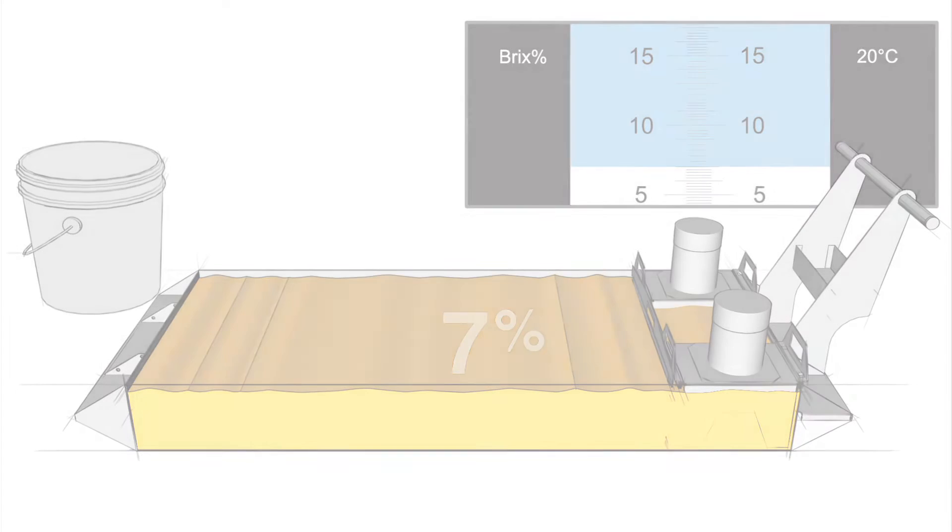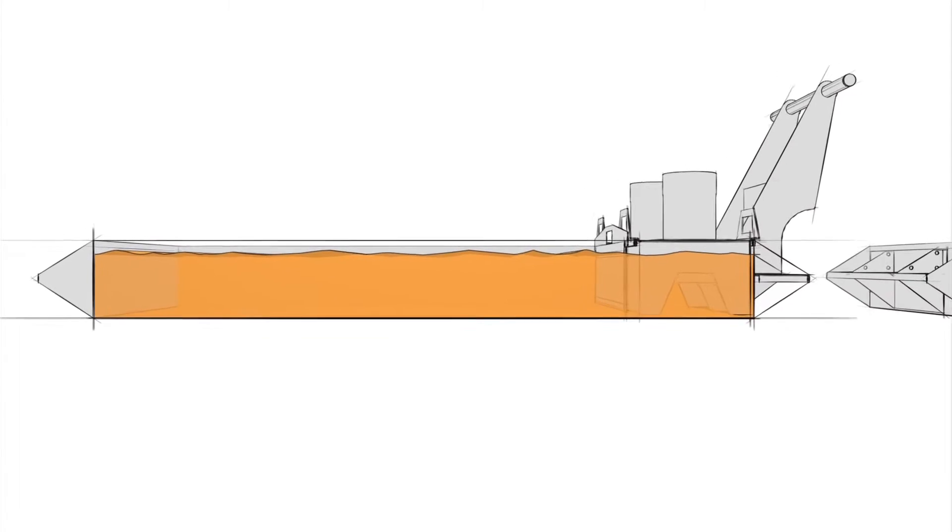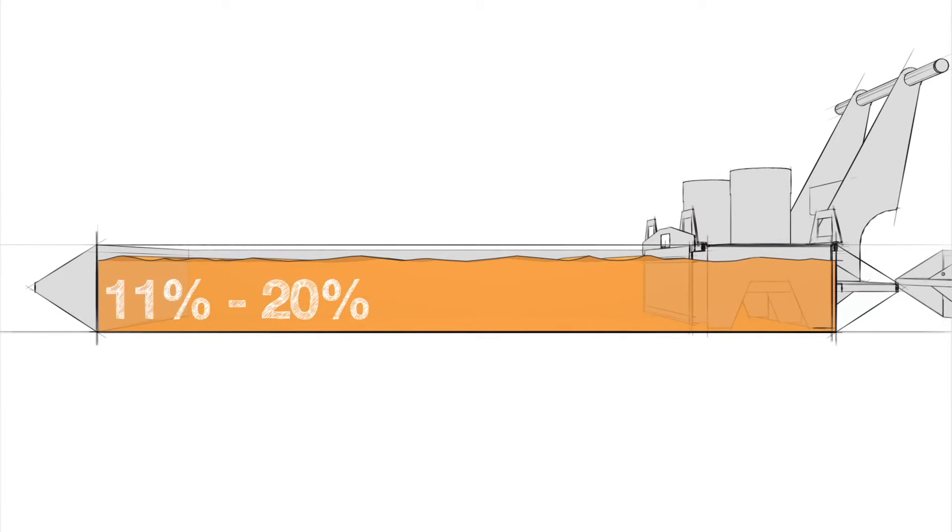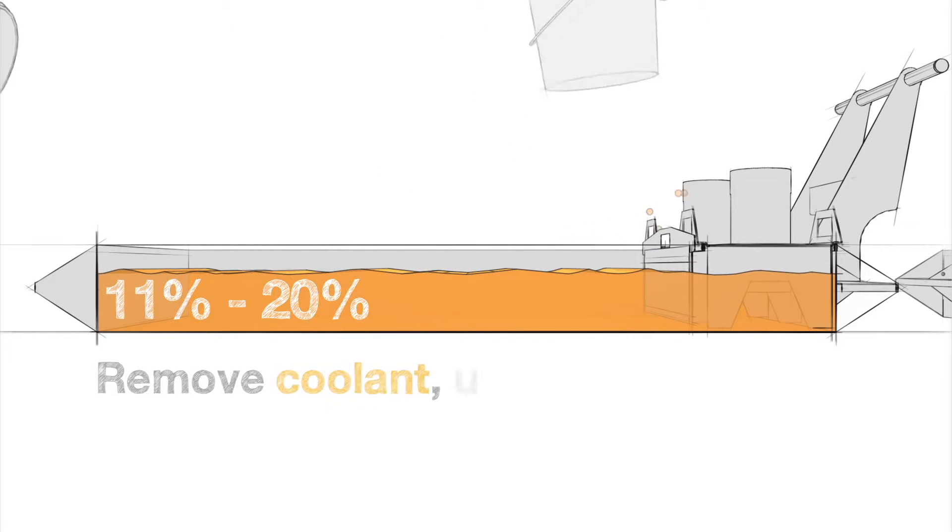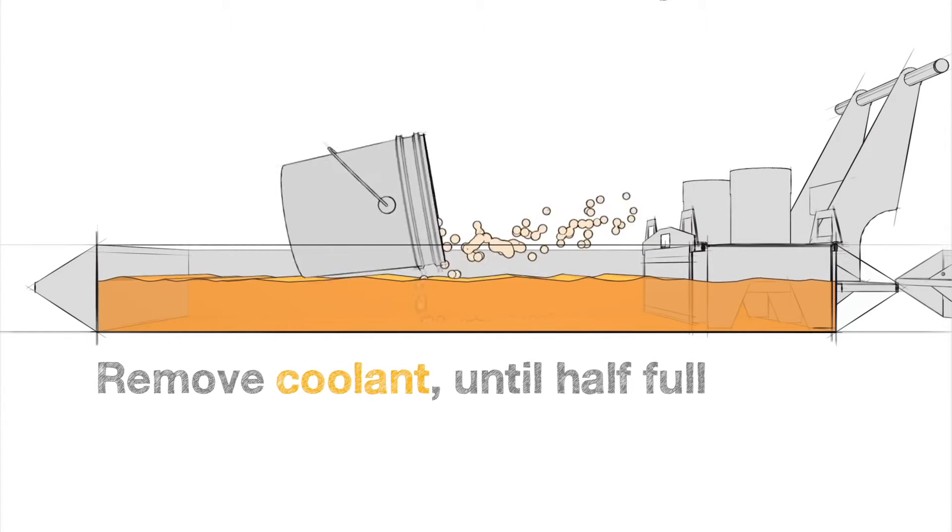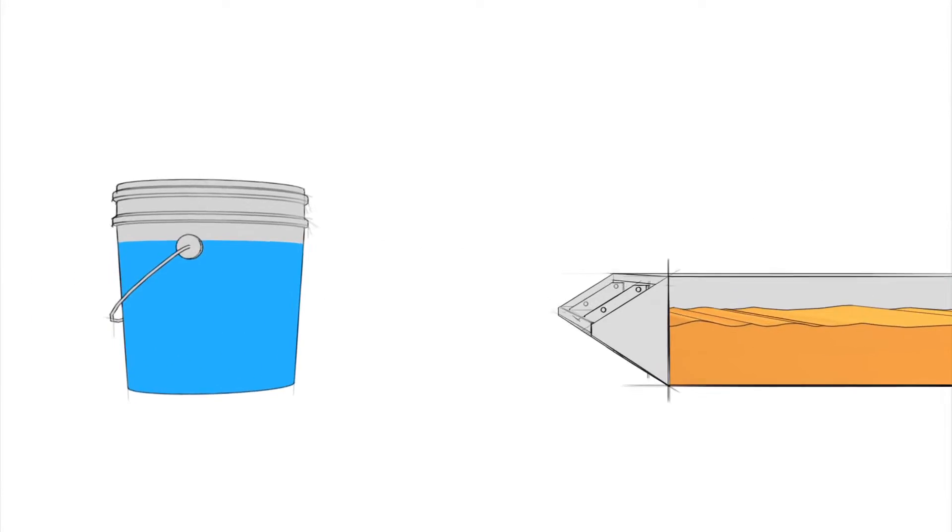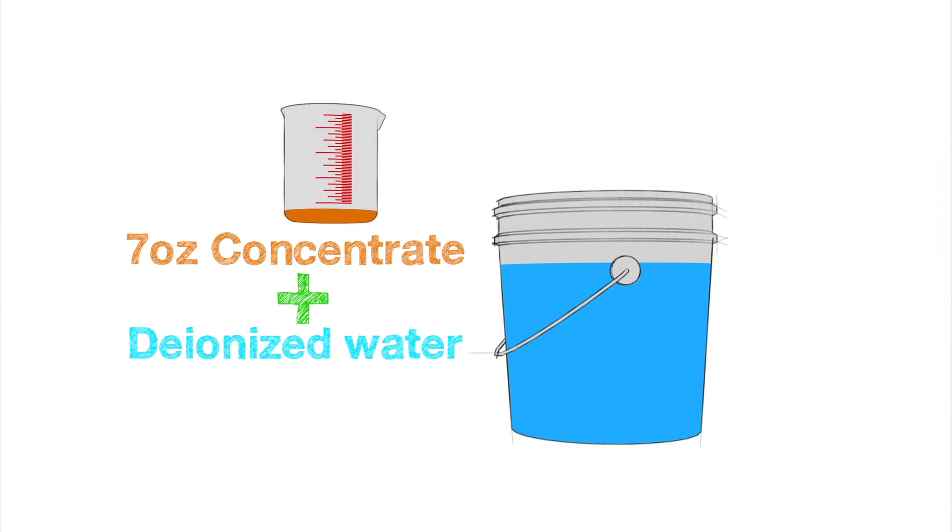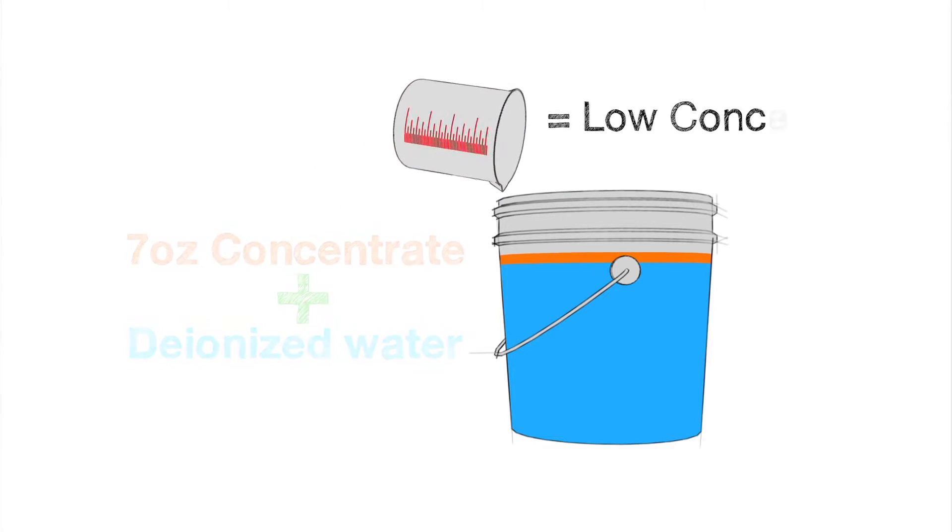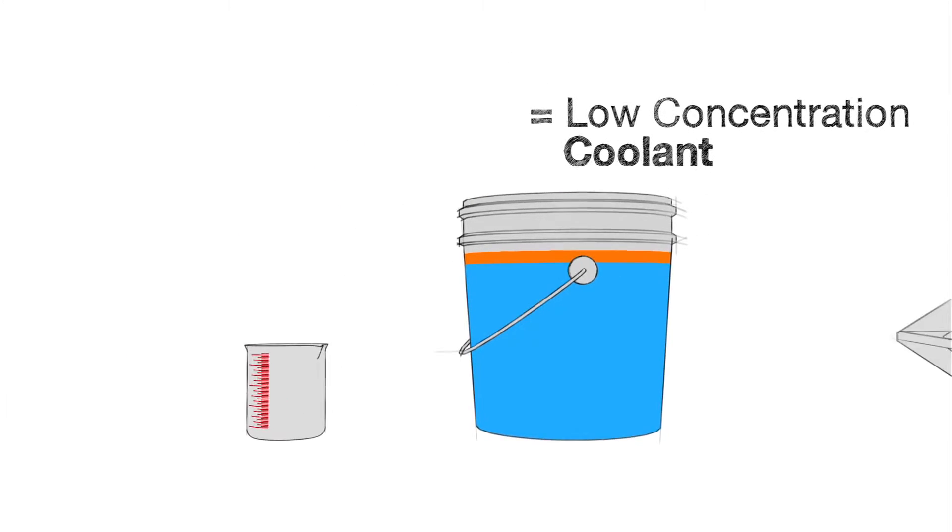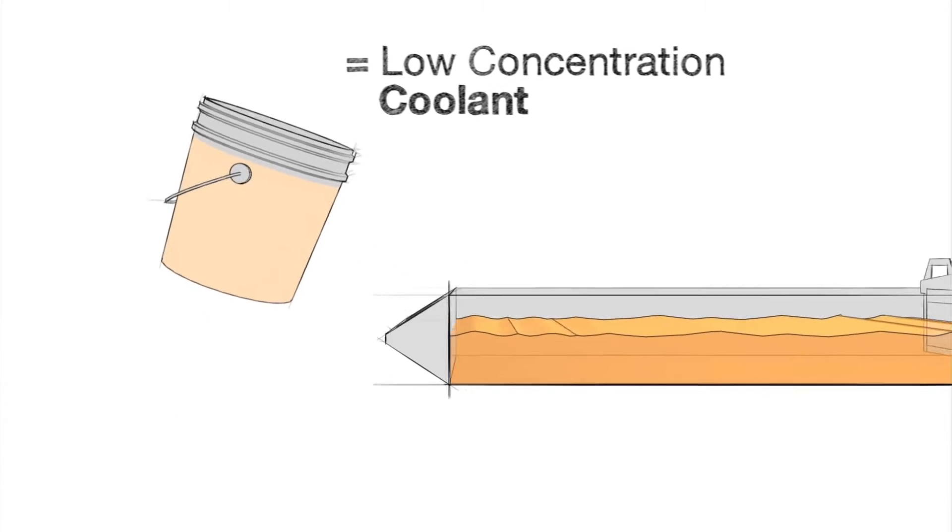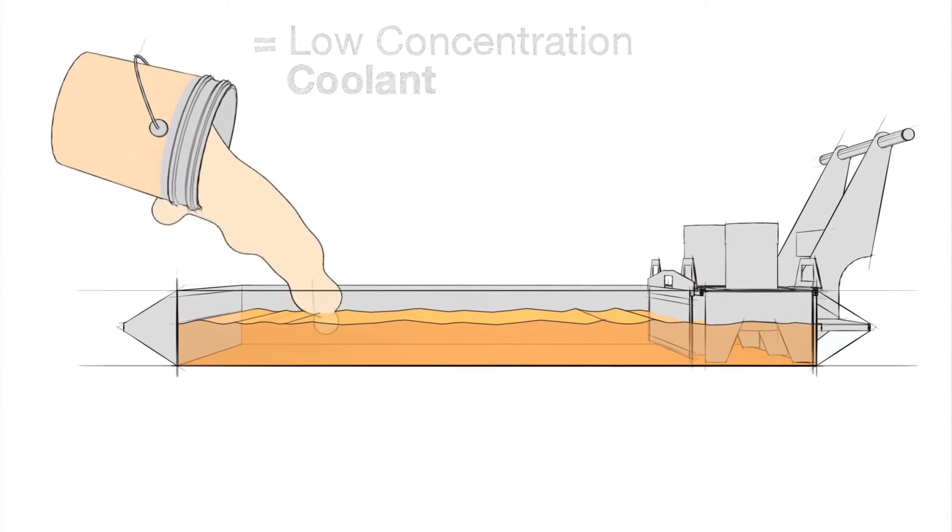Here are a couple of ways to do this that will work with most any brand of coolant. For high concentrations under 20%, run the coolant down to half full during normal use or remove coolant until half full. Then add 5 gallons of deionized water to a bucket and mix in 7 ounces of concentrate to make a 1% mixture and add this to the tank until full.